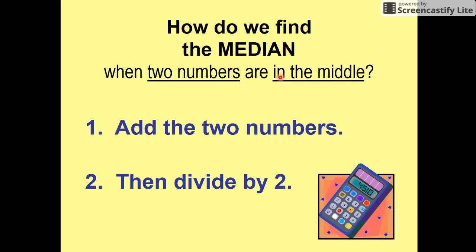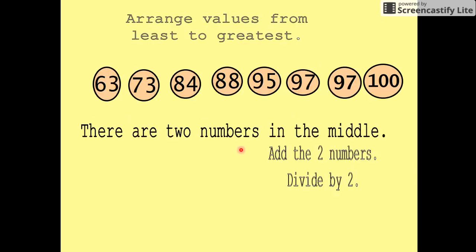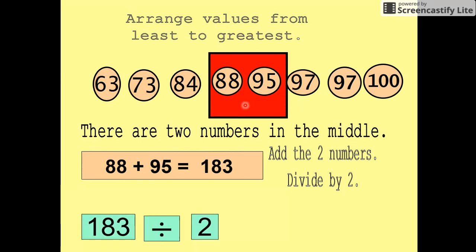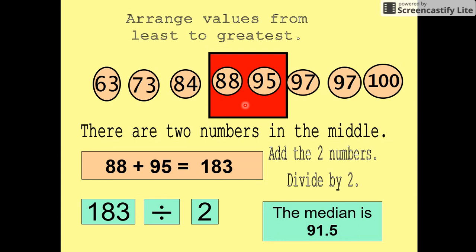So median sounds like medium, and it's the middle. What do we do if there's two numbers in the middle? We add the two numbers together and divide it by two. So if we had an even amount of numbers, we would add 88 and 95, divide by two, and the median would be 91.5.